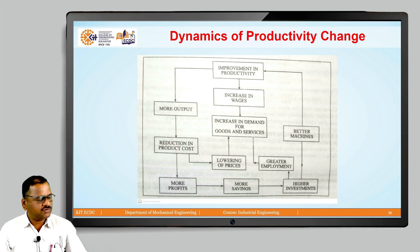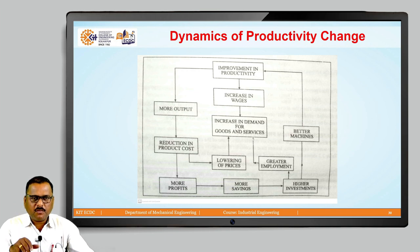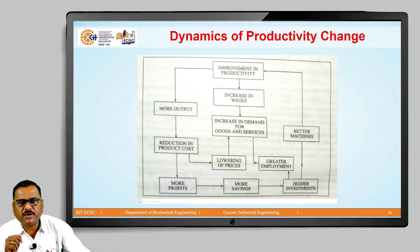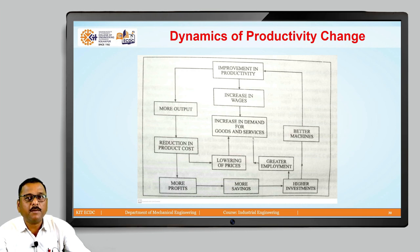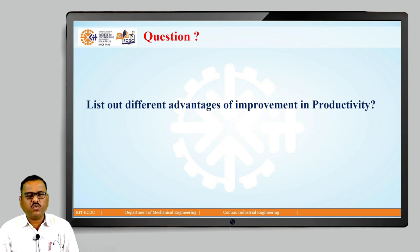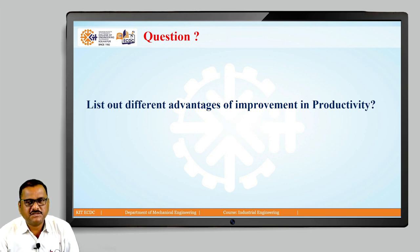Friends, this is regarding the dynamics of productivity change — what will happen due to improvement in productivity. Looking at this diagram more precisely, we can notice that more output, better machines, more profit, and more savings are all advantages gained due to improvement in productivity. Each term mentioned within this slide states the advantages we get due to productivity. Therefore, my question for you is: list out the different advantages of improvement in productivity. Just think over it. Thank you.